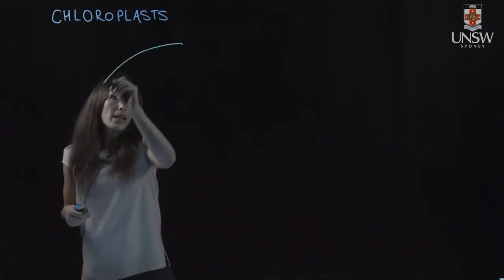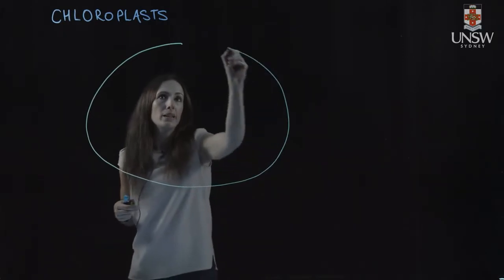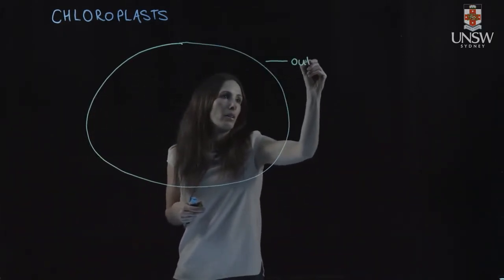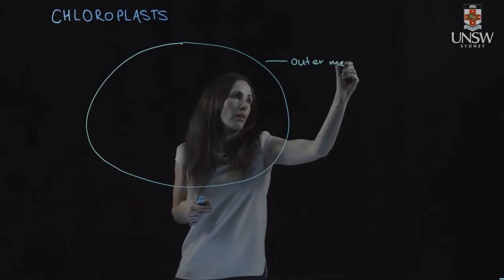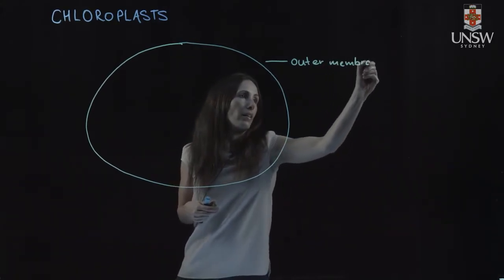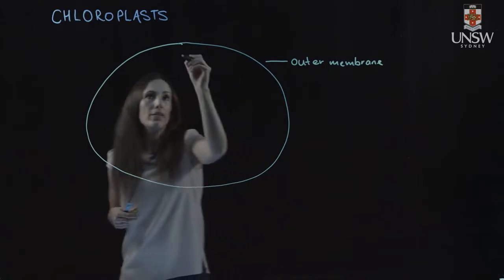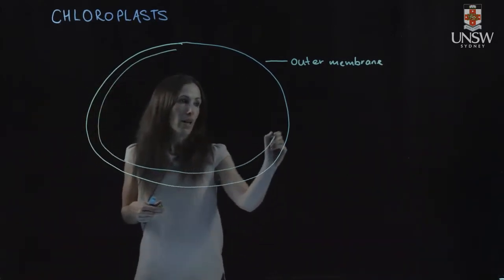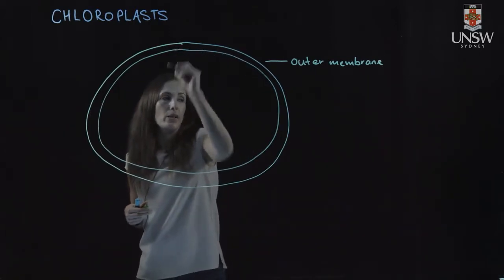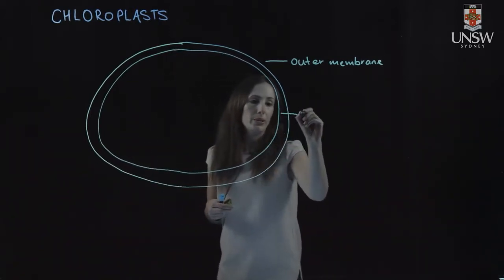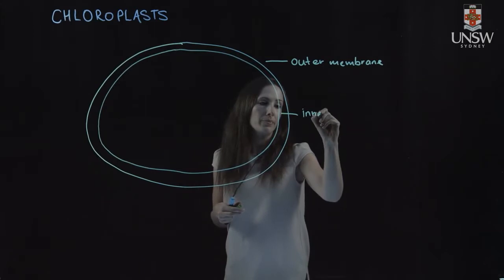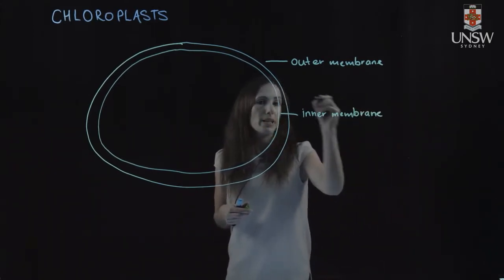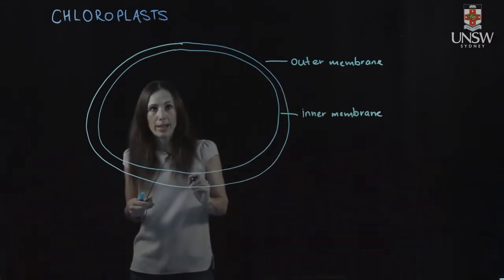And the chloroplast has a double membrane. So here's our outer membrane. And then on the inside, we have another membrane. So some organelles and cells only have a single layer, and this one has two. So here's our inner membrane here. And then this space between them is our intermembrane space.